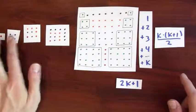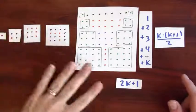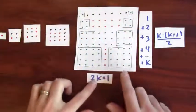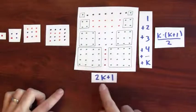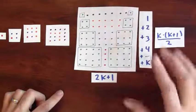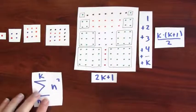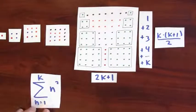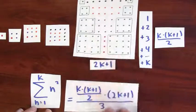So I've taken 3 copies and built them into a rectangle whose base is 2k plus 1, and which is k times k plus 1 over 2 tall. So that means that this sum, which I'm trying to compute, must be...